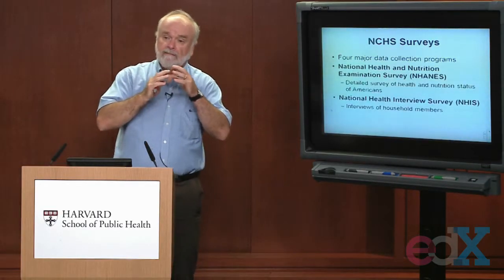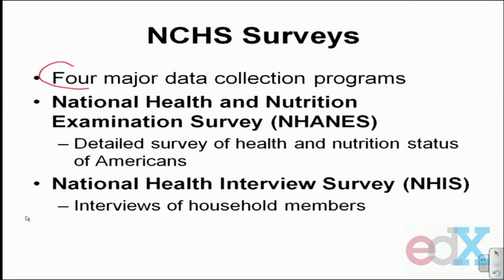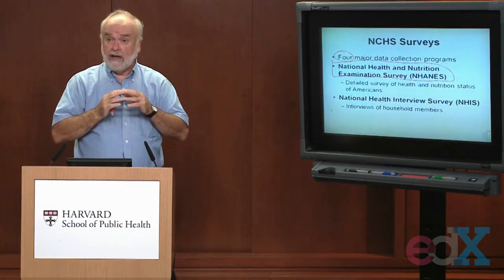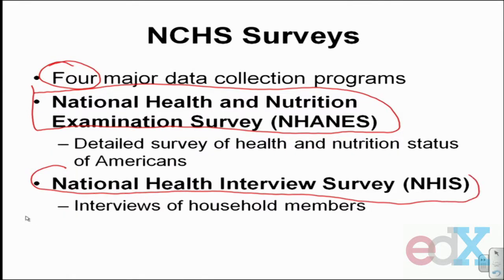Let's talk in more detail about some of the specific surveys available through this center. They have four major programs for collecting data, and I'm going to talk in detail about two of those. One is called the National Health and Nutritional Examination Survey — NHANES. This is a detailed survey of the health and nutritional status of Americans. Every year, surveys are done of individuals examining their health status and nutritional status. Another important survey is called the National Health Interview Survey, the NHIS.